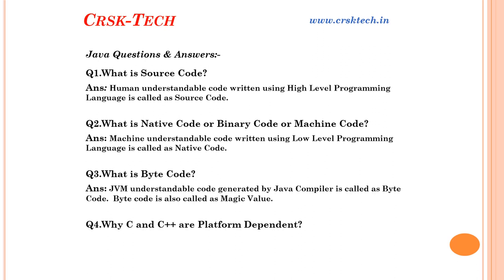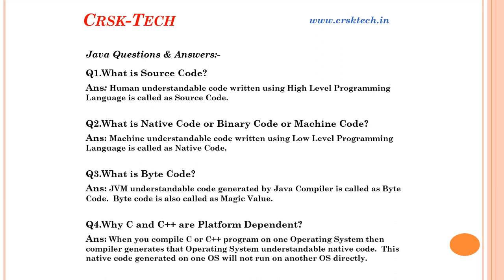Question number four: Why are C and C++ platform dependent, and why is Java platform independent? When you compile a C or C++ program on one operating system, the C or C++ compiler generates that operating system's understandable machine code. So the machine code generated on one operating system cannot be run on any other operating system. For example, if I write a C++ program on Windows and compile it with the C++ compiler on Windows, the machine code is generated for Windows and cannot run on any other OS. That's why C and C++ are platform dependent.